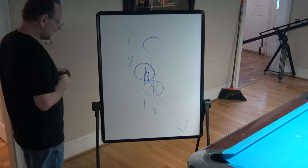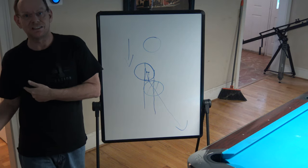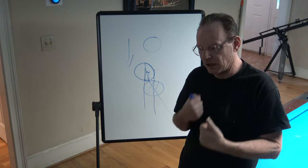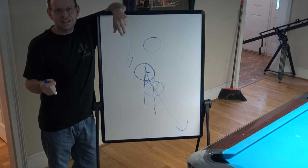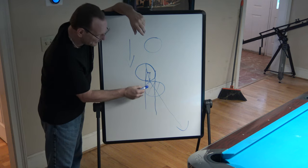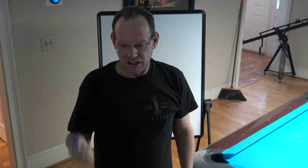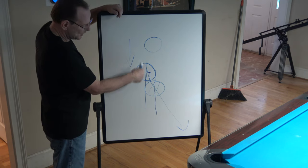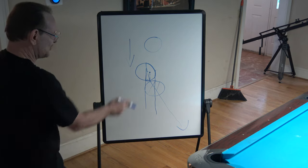I roughly consider the effective cut induced spin to be about half a tip. Then, averaging across the range from zero to half a tip, I call it a quarter of a tip of English. This is not exact — it's going to depend on a lot of factors. If the balls are dirty, it's going to have more spin. If the balls are clean and polished, it'll have less. What you need to know is that a quarter of a tip is the effective maximum running English you're going to get from a cue ball that hits with no other applied spin.